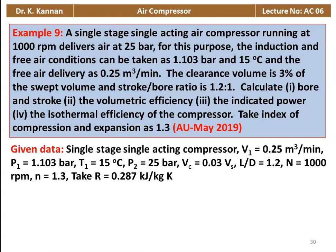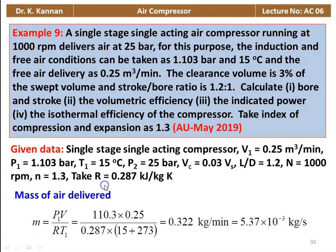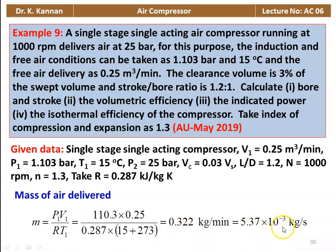Given data: single-acting single-stage compressor, volume of air 0.25 meter cube per minute, P1 equal to 1.103 bar, T1 equal to 15°C, P2 equal to 25 bar, Vc equal to 0.03 Vs, L by D ratio equal to 1.2, N equal to 1000 rpm, n equal to 1.3, R equal to 0.287 kJ/kg·K. Mass of air delivered: M equal to P1·V1 divided by R·T1. P1 equals 110.3 kPa, so 110.3 into 0.25 divided by 0.287 into 288 equals 0.322 kg/min, which is 5.37 times 10 to the power minus 3 kg/s.